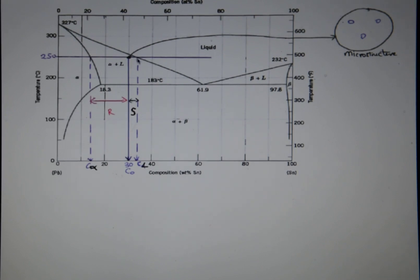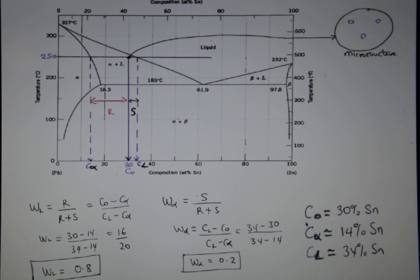And where the line intersects the liquidus line, which is this line over here, you project it down to the horizontal axis and that's C L. So approximately C alpha is about 14% tin and C L is about 34% tin.